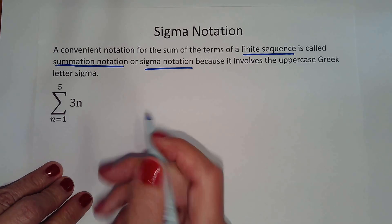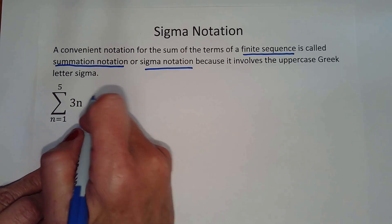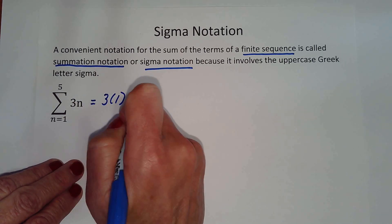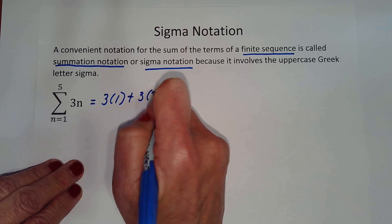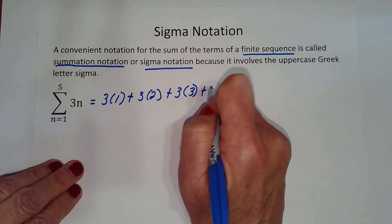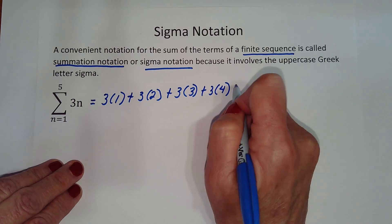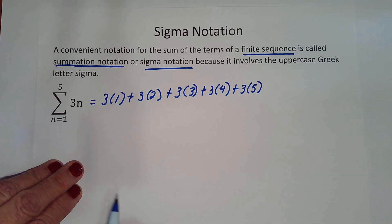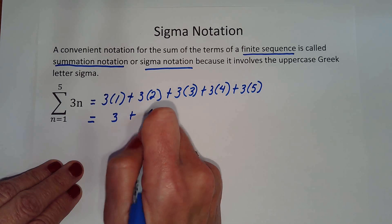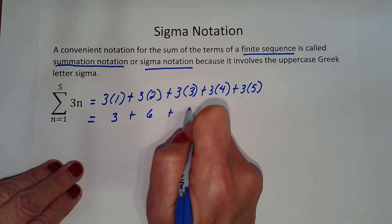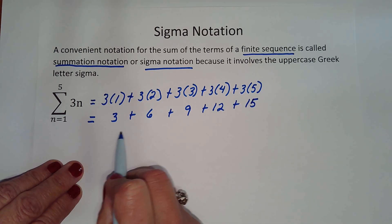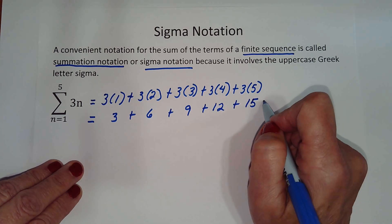So first we write our sequence. 3n equals 3 times 1, plus 3 times 2, plus 3 times 3, plus 3 times 4, plus 3 times 5. So we have 3 plus 6 plus 9 plus 12 plus 15. When we add these together we get 45.